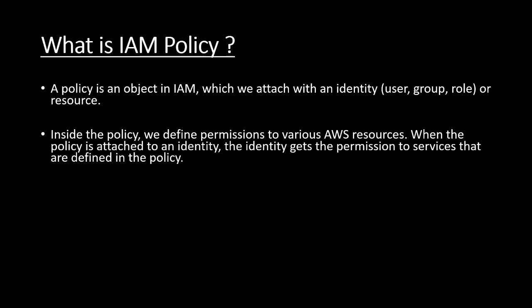A policy is a document in which we write the permissions for various AWS resources. When the policy is attached to an identity, the identity gets the permission to services that are defined in the policy. So the steps are: first we create the policy and inside the policy we define the permissions to various AWS resources, and then we attach these policies to various identities.